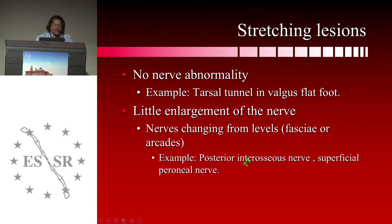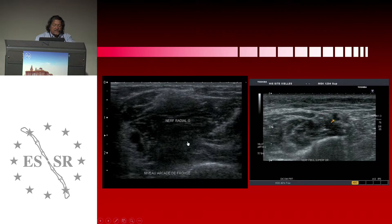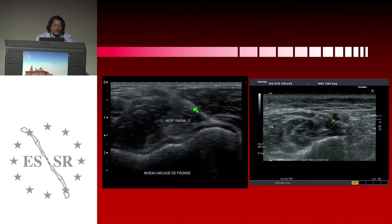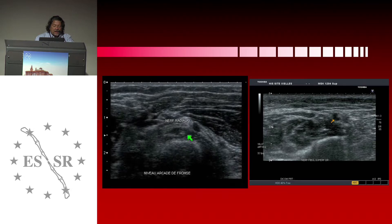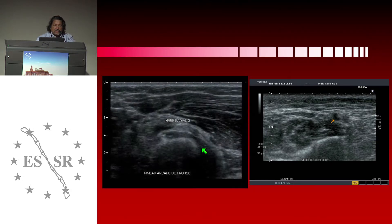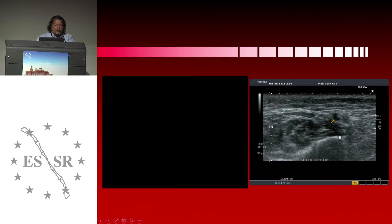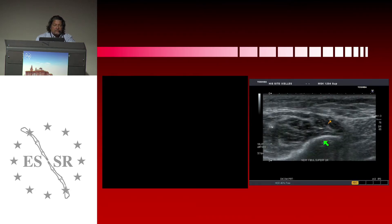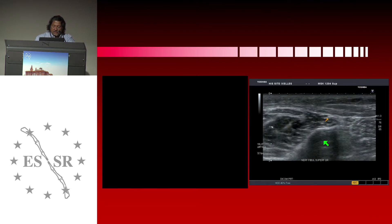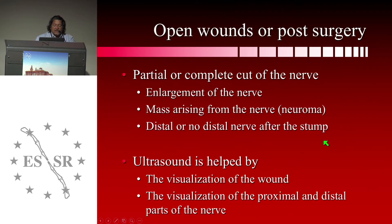Typical examples of stretching lesions are the posterior interosseous nerve at the elbow and the superficial peroneal nerve at the inferior third of the lower limb. Here is the radial nerve divided in two, and you can see the posterior interosseous nerve suddenly becoming bigger at the arcade of Frohse — a stretching lesion. This is the superficial peroneal nerve near the peroneal muscles and fibula; you can see that this nerve is much bigger at the level where it passes through the fascia to the superficial part, showing only a small nerve enlargement.